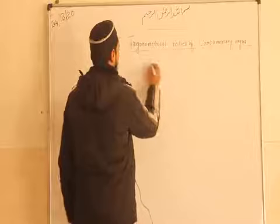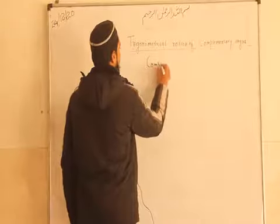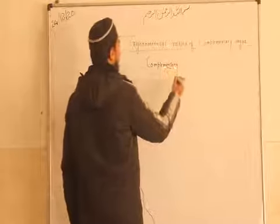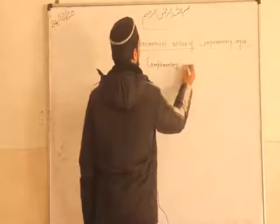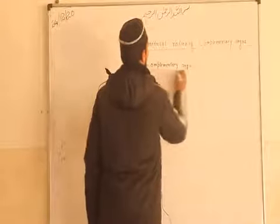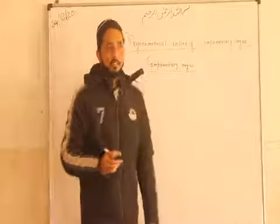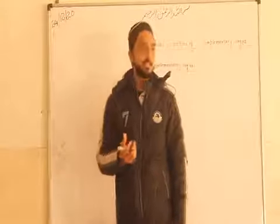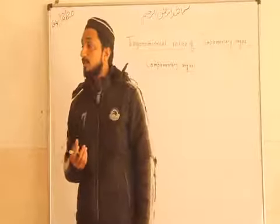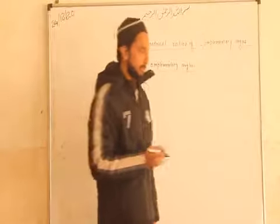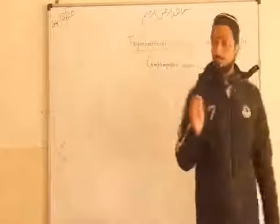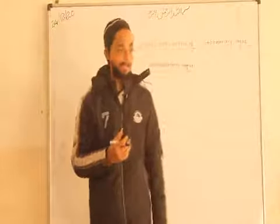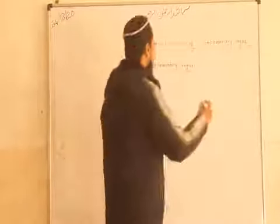What are the complementary angles? Two angles are said to be complementary when their sum is 90 degrees. Okay, they are known as complementary angles.